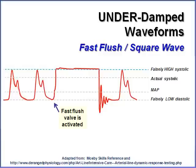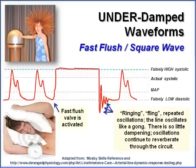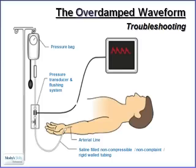An underdamped waveform is the opposite of getting your hair rained on. There's too much noise in the system — it's too excitable. The fast flush generates a ringing or fling effect with multiple oscillations. More than two is abnormal, so we want to quiet this down by checking your tubing and circuit and making sure there are no air bubbles. In another example of an underdamped waveform, a little rain needs to happen to dampen the system.